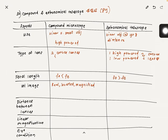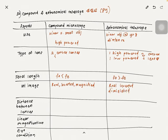The first image formed in the astronomical telescope is real, inverted, and diminished. The distance between the two lenses in a compound microscope is greater than fo plus fe, whereas the distance between the lenses in the astronomical telescope is equal to fo plus fe.